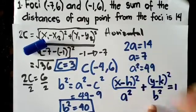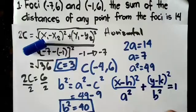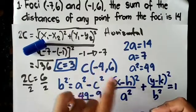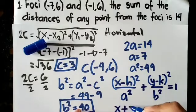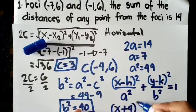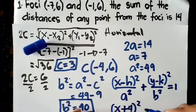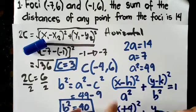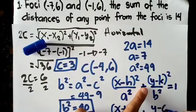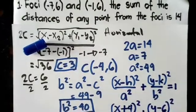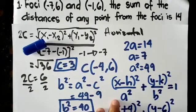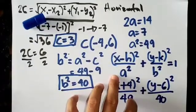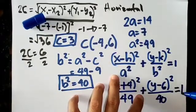Then substitute the value. So when minus becomes positive: (x + 4)² over a² which is 49, plus (y - 6)² over b² which is 40, equals 1.